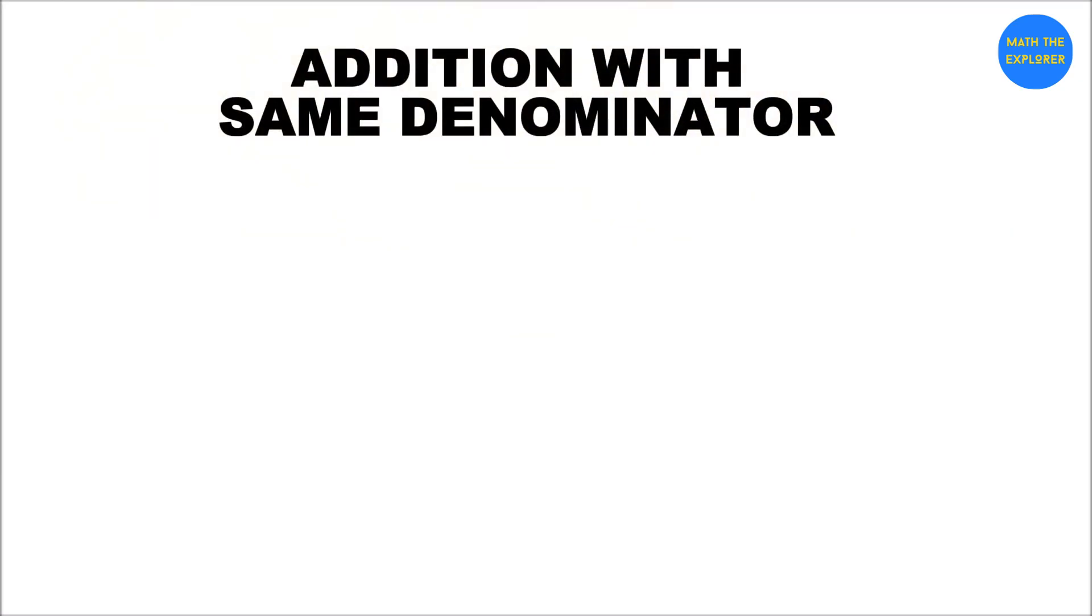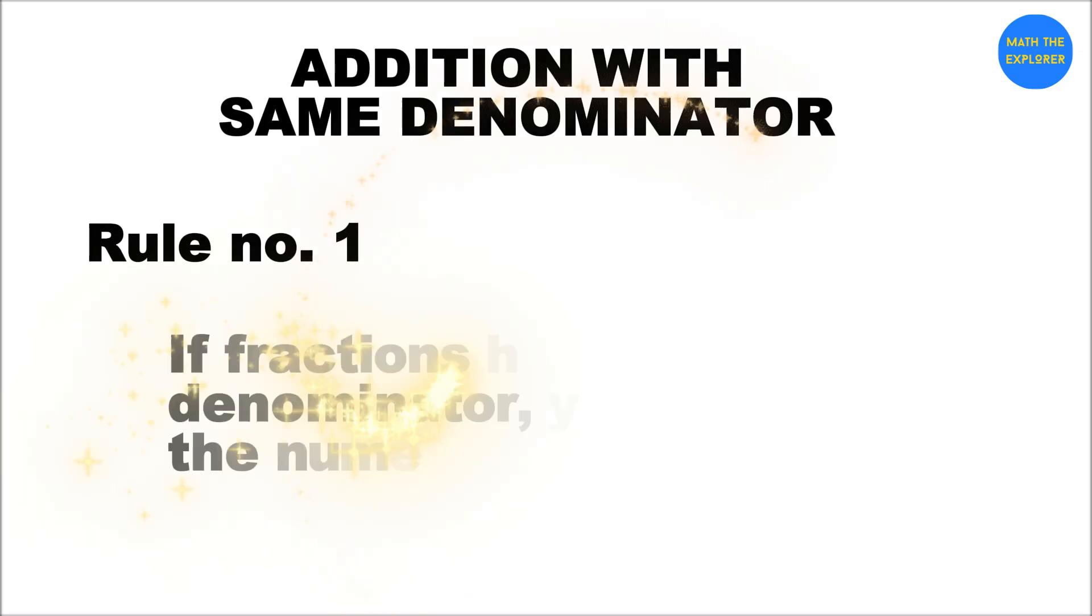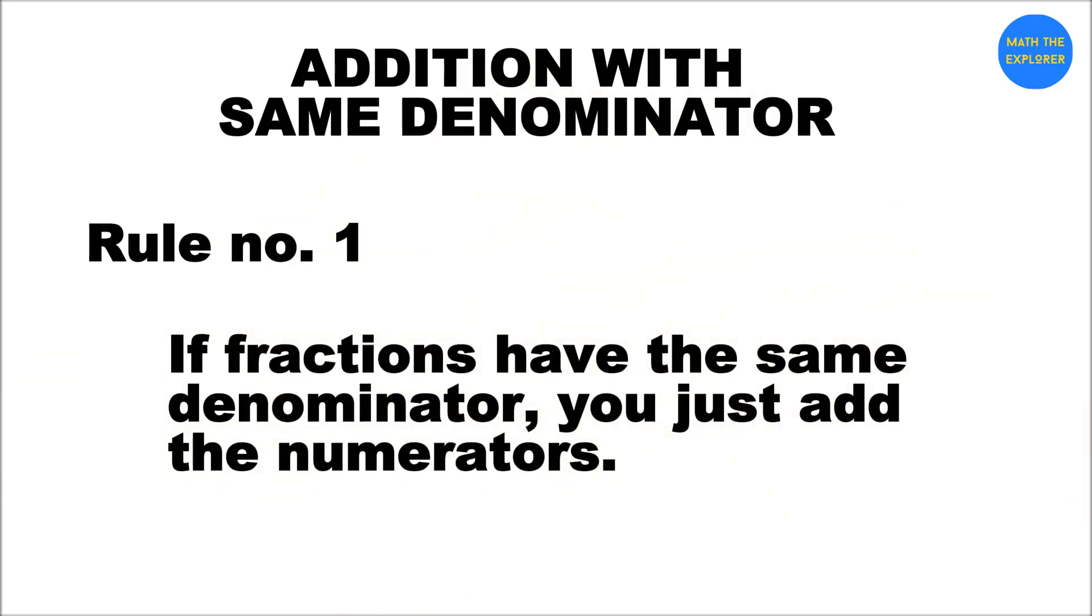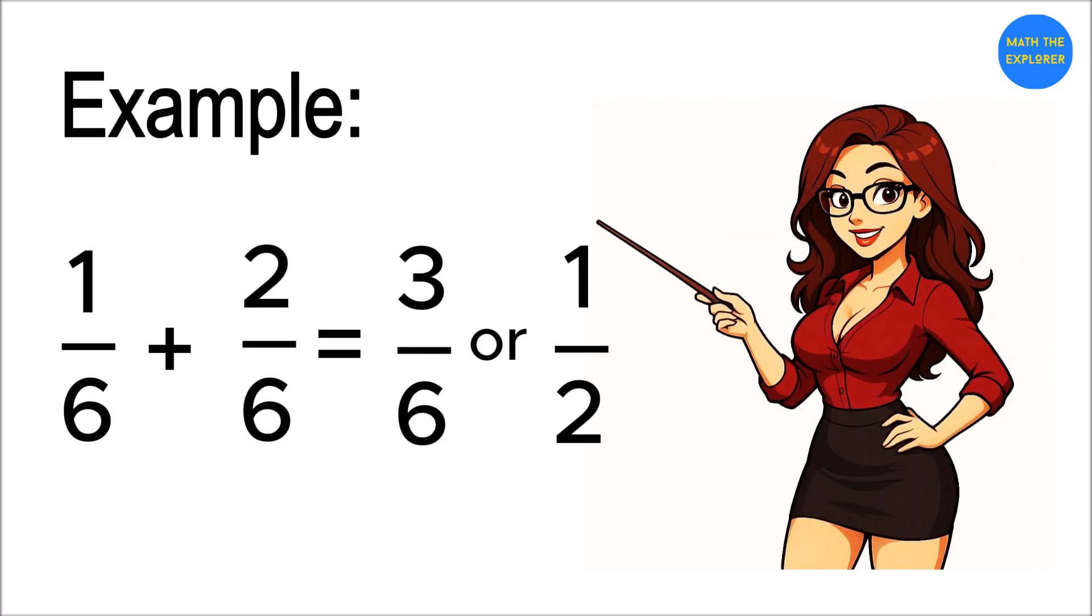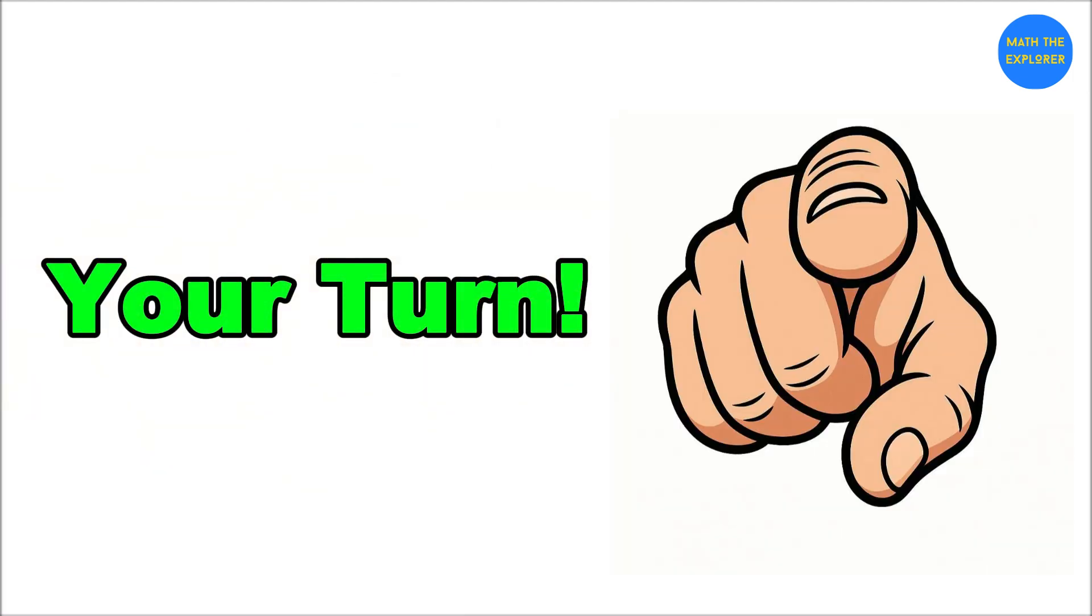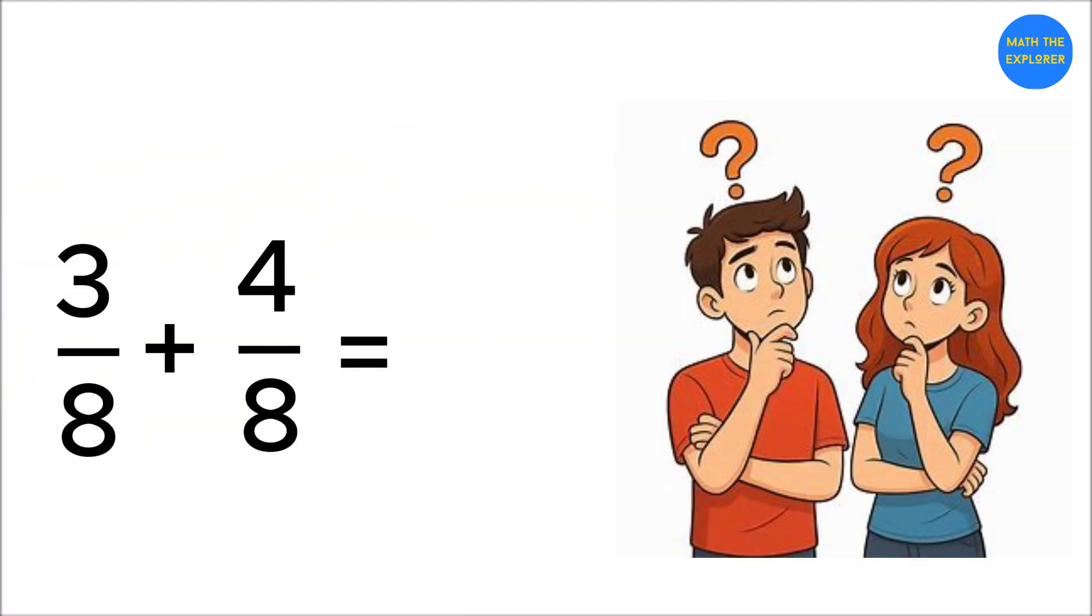Rule number one: if fractions have the same denominator, you just add the numerators. Example: 1/6 + 2/6 = 3/6, which simplifies to 1/2. Your turn: what's 3/8 + 4/8? I'll give you three seconds. Did you say 7/8? Correct!